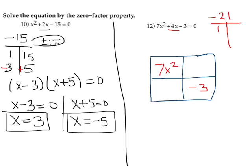Let's think about this. 1 and 21, 3 and 7. 3 and 7 are the only combination that will somehow give me 4. So let's see here. What can I do? To get a negative 21, it would have to be positive times negative or negative times positive.